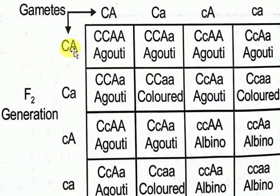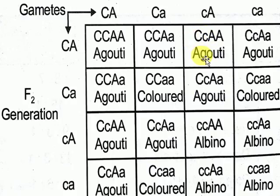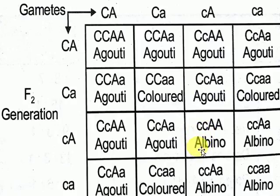Filling in the Punnett square: wherever both C and A are dominant — whether homozygous or heterozygous — the result is agouti, because dominant always expresses. Where only capital C is dominant (A is recessive), the result is colored. Where only capital A is dominant (C is recessive), the result is albino. Remember: agouti when both are dominant; colored when only C is dominant; albino when only A is dominant or both are recessive.